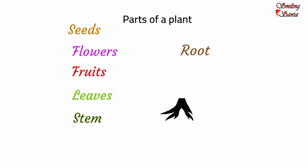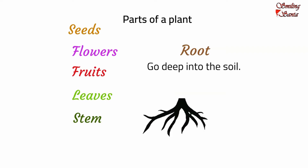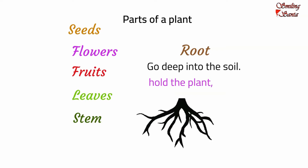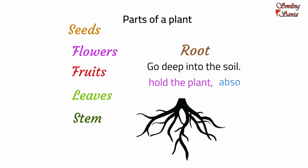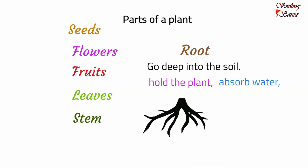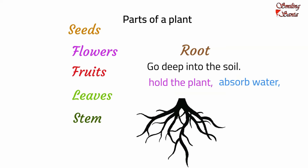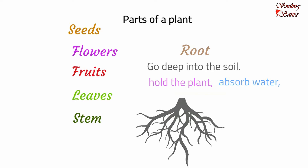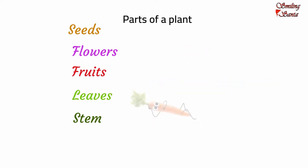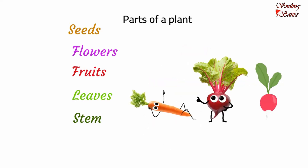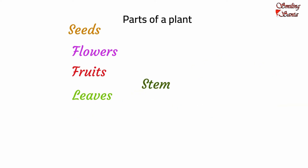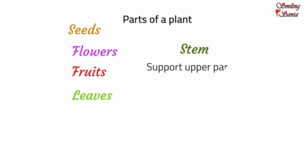Roots of a plant grow deep into the soil. Roots help to hold the plant firmly in the soil — they fix the plant in the soil. They absorb water, minerals and other nutrients from the soil, and then help them reach the other parts of the plant. Carrot, beetroot, radish and turnip are some of the roots that we eat as vegetables.